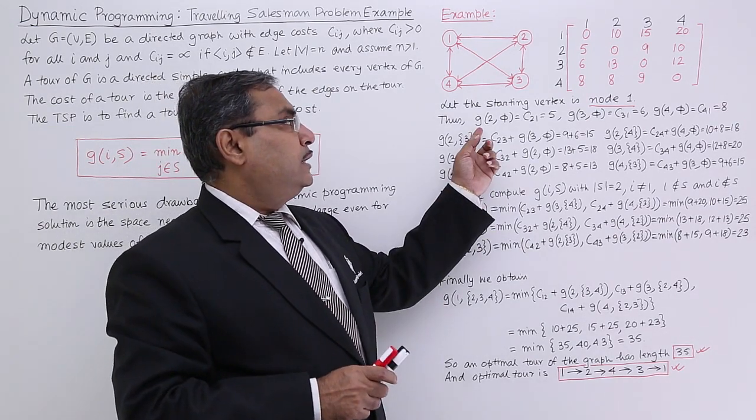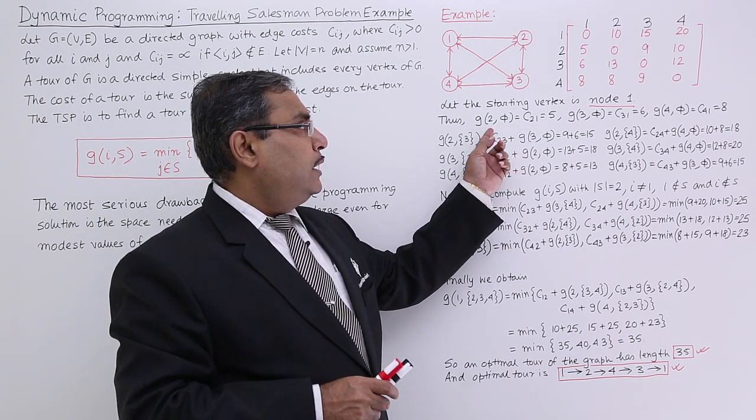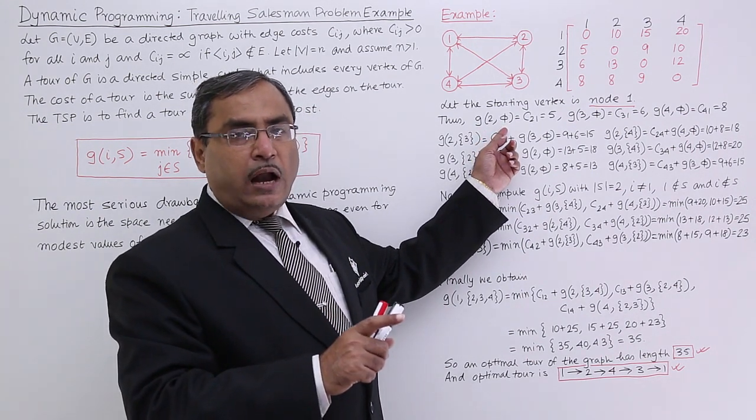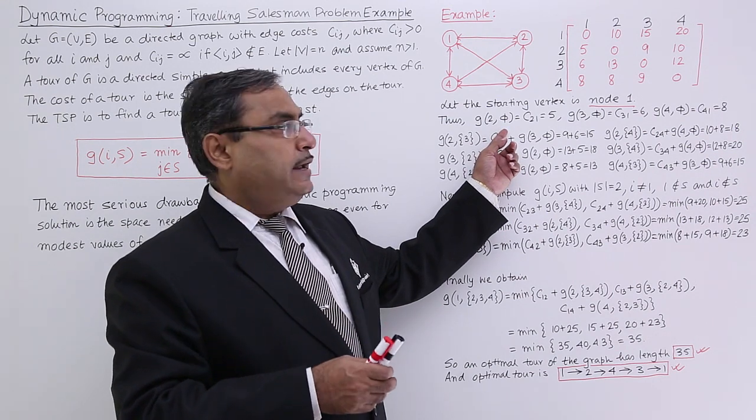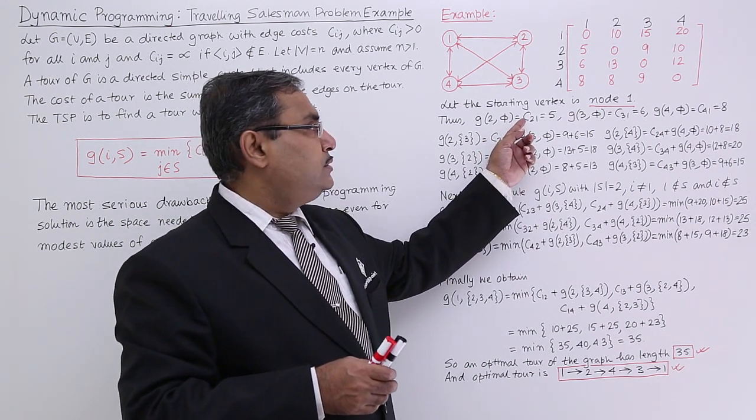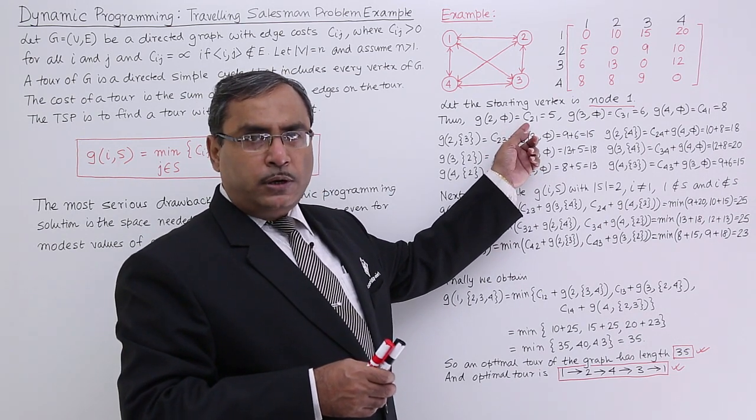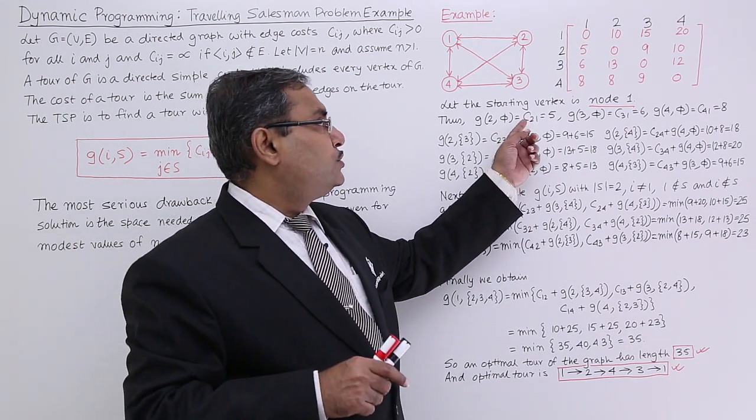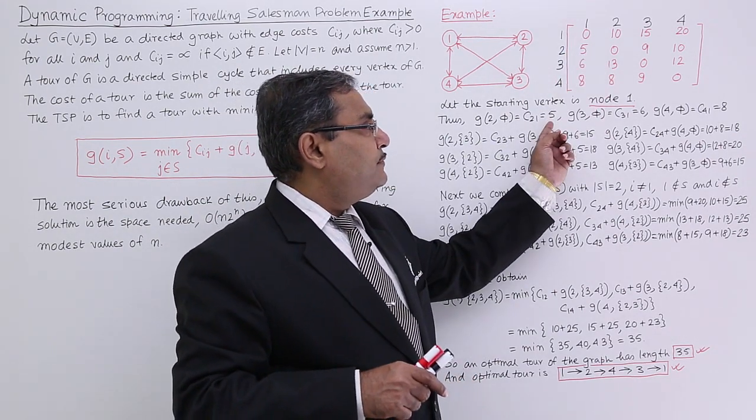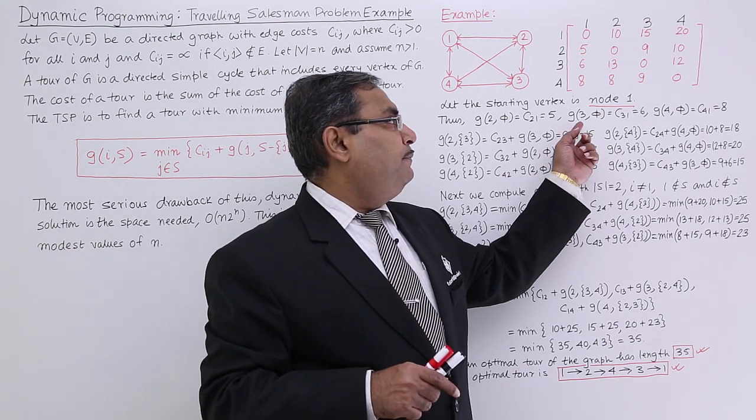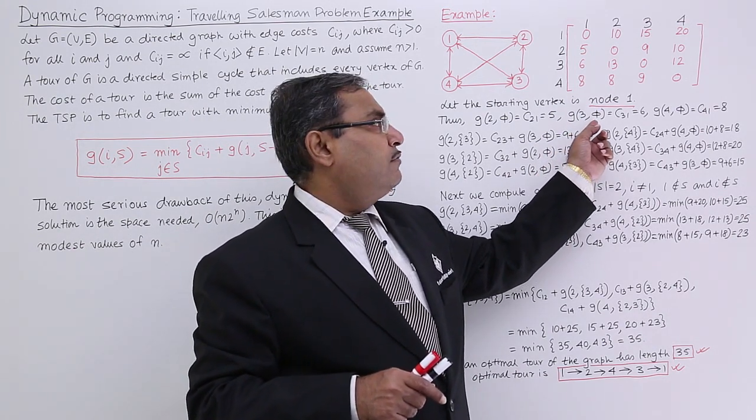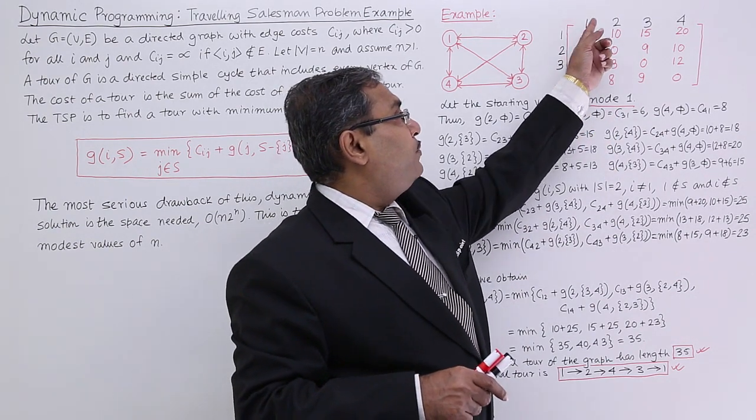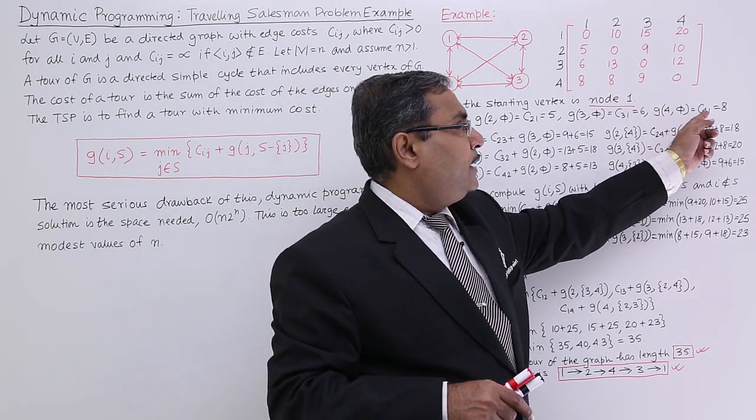Now if we consider g(2,φ) that means I am now at node number 2 and there is no remaining untraversed nodes. That means s is φ. In that case I should consider the cost C21 because from node number 2 I should return back to 1 because that is a closed cycle. C21 means the cost is 5. If my last node is 3 and remaining untraversed set is empty, I shall take the cost C31. C31 means 6. In this way, I did the rest.